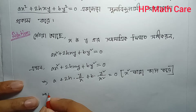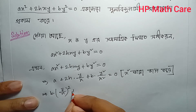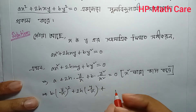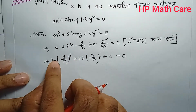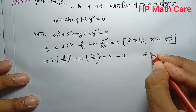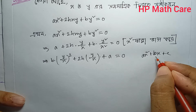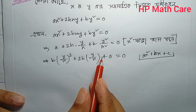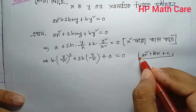So the key approach: let y/x = m. We get m² + 2m + 1 = 0, which factors. The general quadratic form is ax² + 2bx + c = 0. We substitute and use the relationship of roots to get the two slope values from this equation.